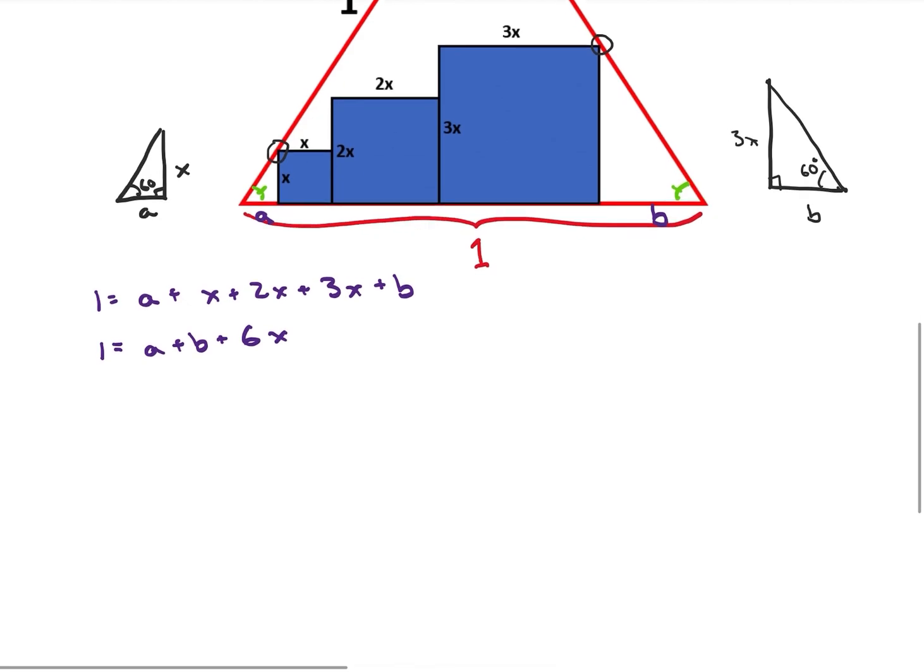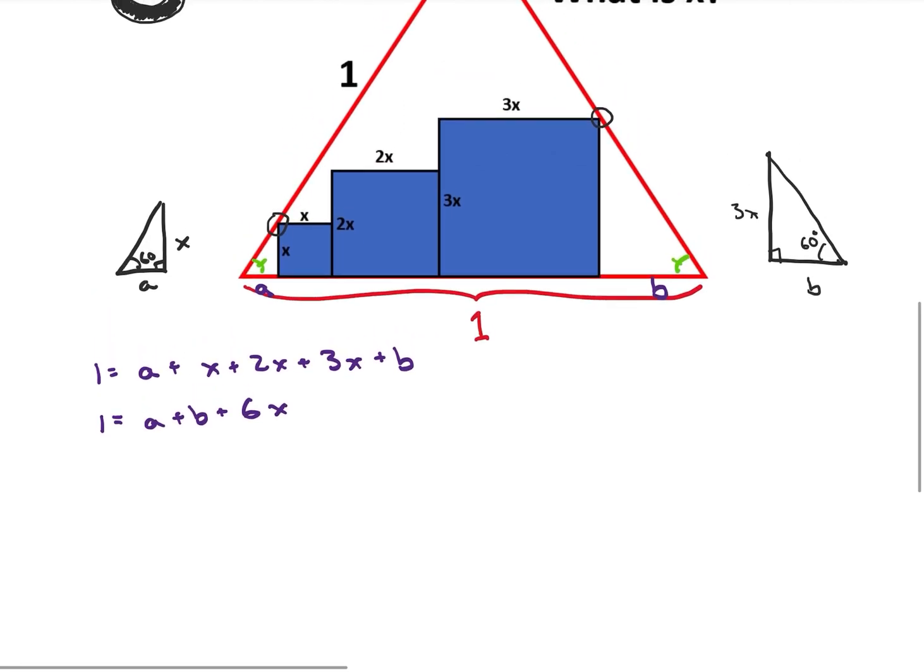So since they're similar triangles, I'm going to be able to go ahead and say that x over A, so the long over the short is going to be equal to 3x divided by B. And that's because they're similar triangles. So if I cut those out, all of a sudden, this simplifies. And now I know that B is equal to 3a.